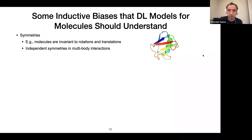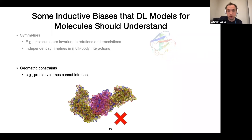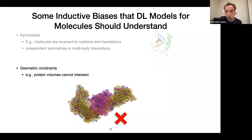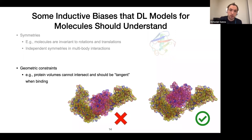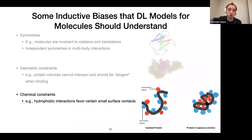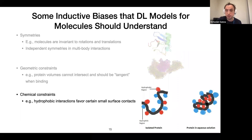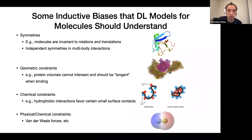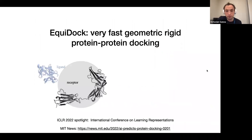We also have the idea of independent symmetries when talking about multi-body interactions, which I'll highlight for molecular docking. There are also geometric constraints: if we want to predict how two proteins attach to each other, we know their volumes — viewed as point clouds or mesh surfaces — cannot intersect, and in fact should be tangent during binding. We also have chemical constraints: hydrophobic interactions favor certain surface contexts and interactions. And physical constraints such as various types of intermolecular forces like van der Waals.